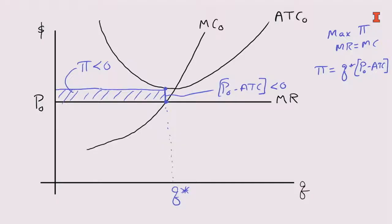We have to think about what this firm is going to do. This is a short run equilibrium — the firm is maximizing profits and doing the best it can. In the long run, profits less than zero — economic profits less than zero — means firms are going to get out of this industry.